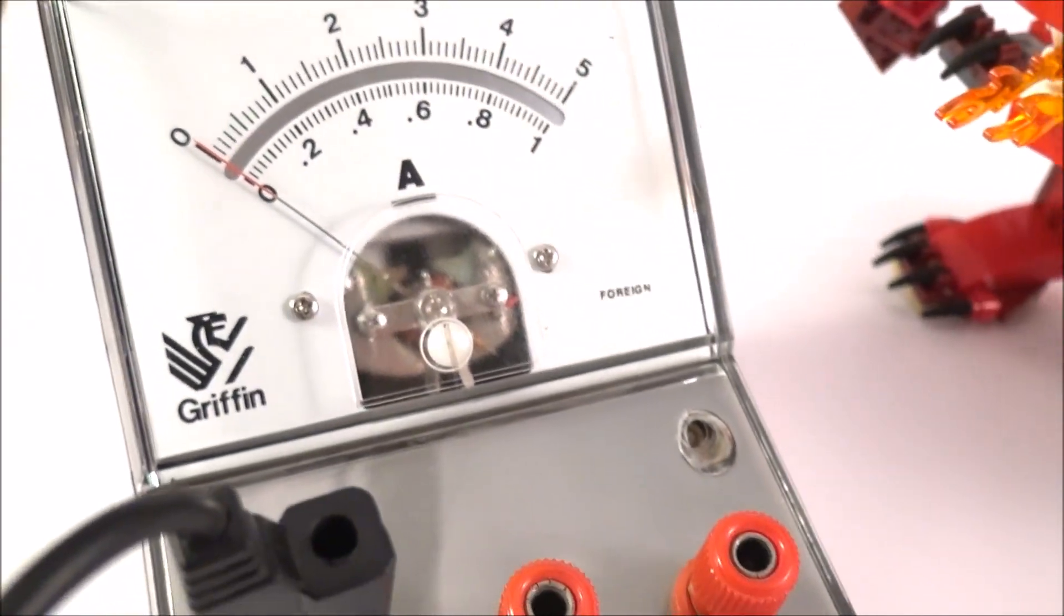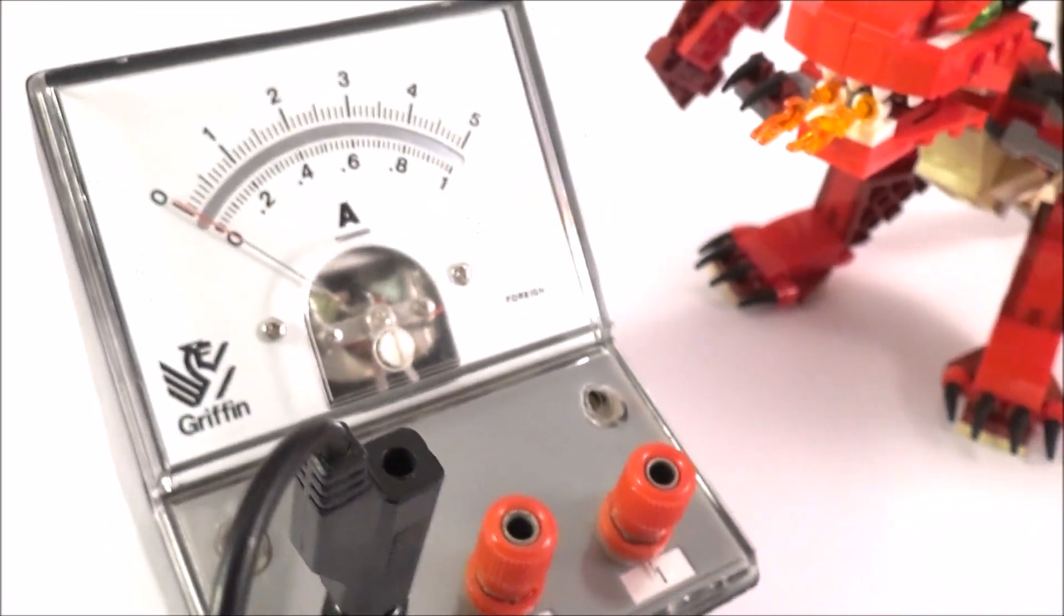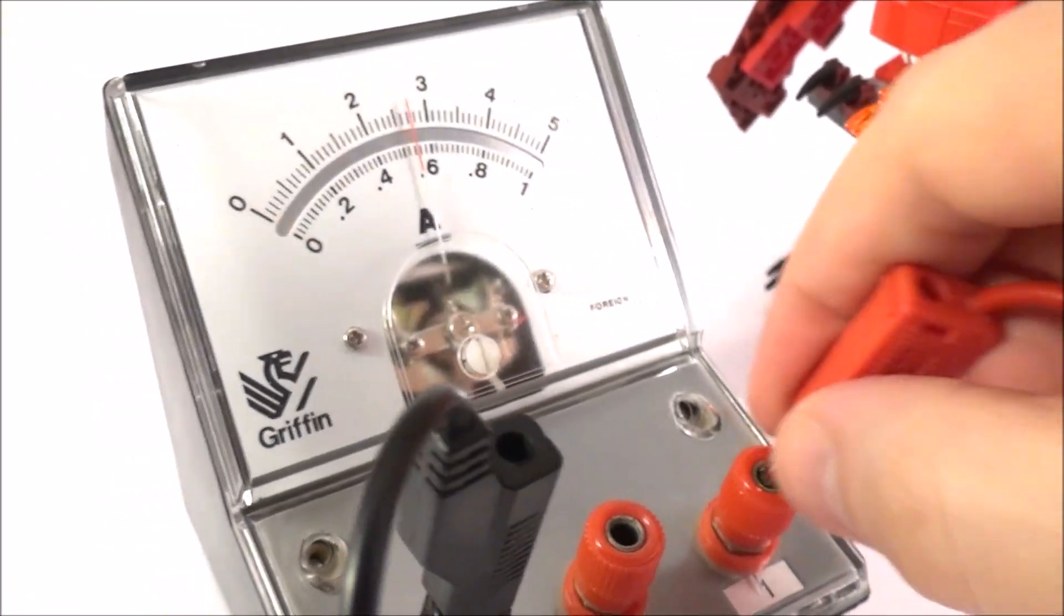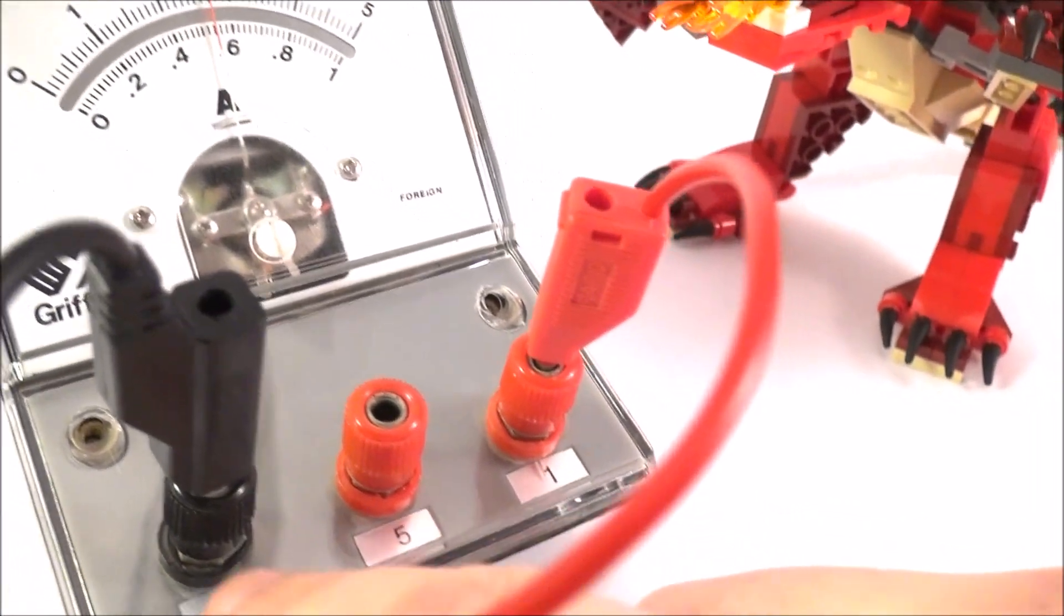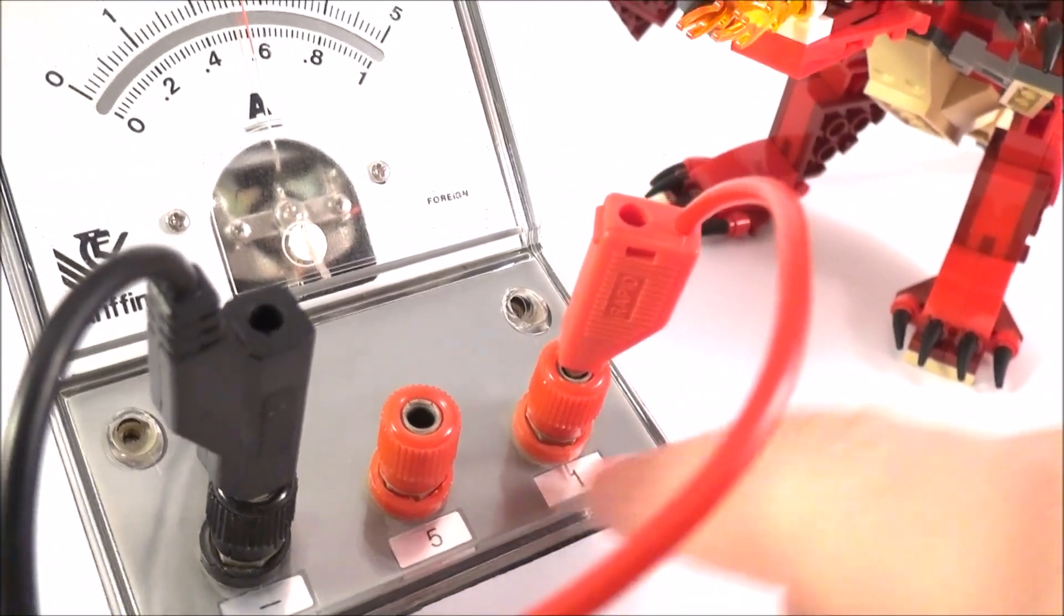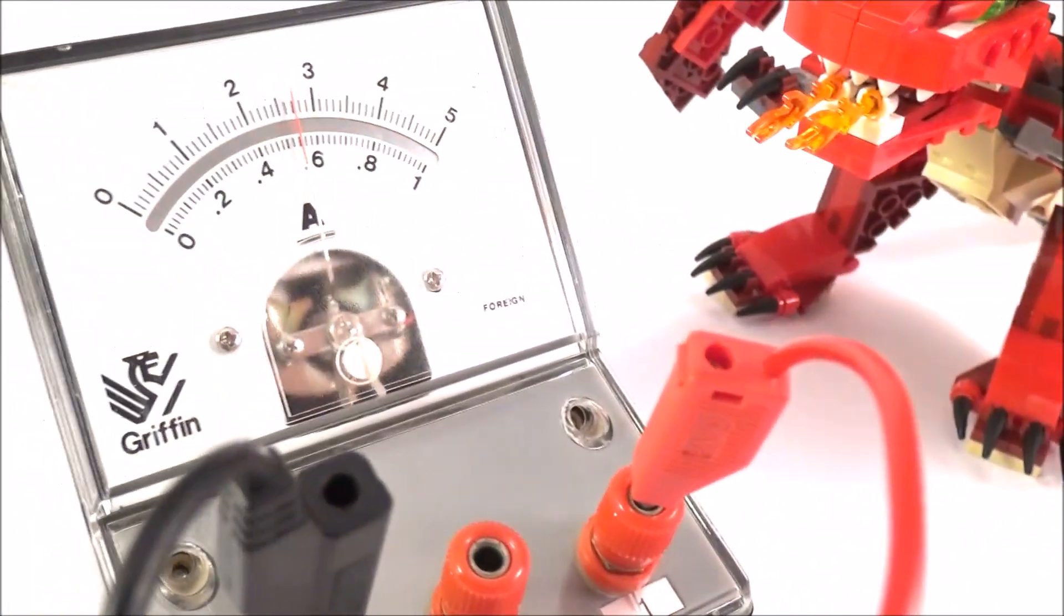Now, this one here is an ammeter, and what I'm going to be doing is measuring the current in a small circuit. So if I plug that in, what I'm going to use is the ammeter set between 0 and 1 amp, and therefore I'm going to be looking at the bottom scale here.